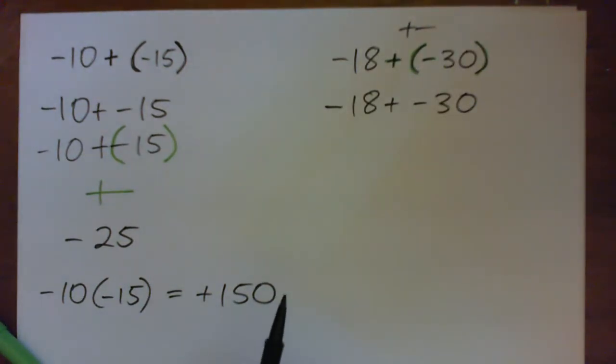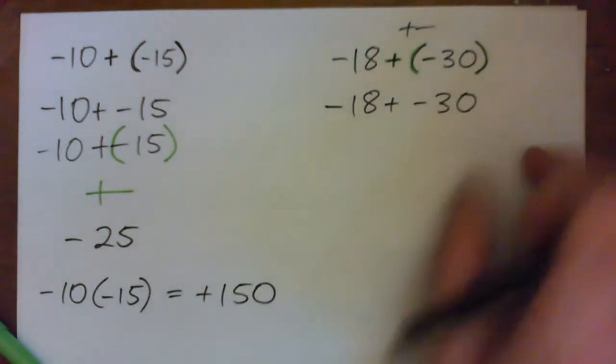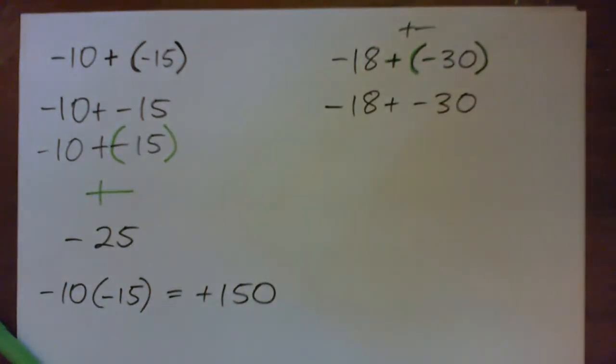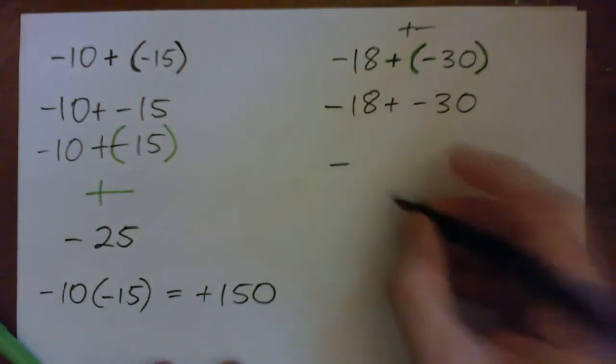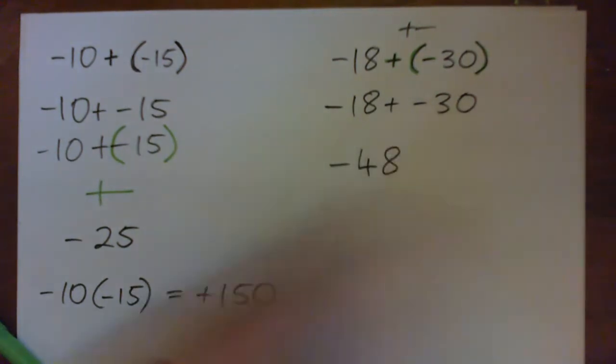So it's negative 18 bad guys plus 30 bad guys. So it's a whole lot of bad guys. Or I've got a debt of $18 added to a debt of $30. So it's a combined debt of $48, or negative 48.